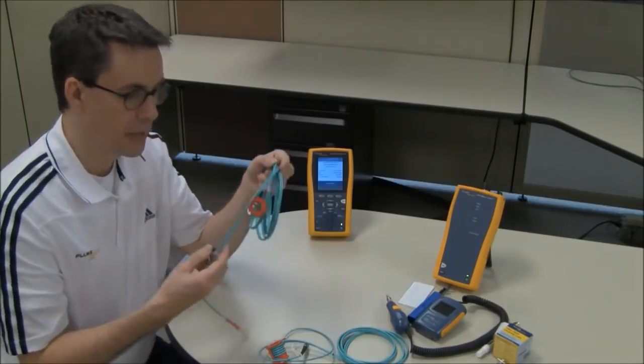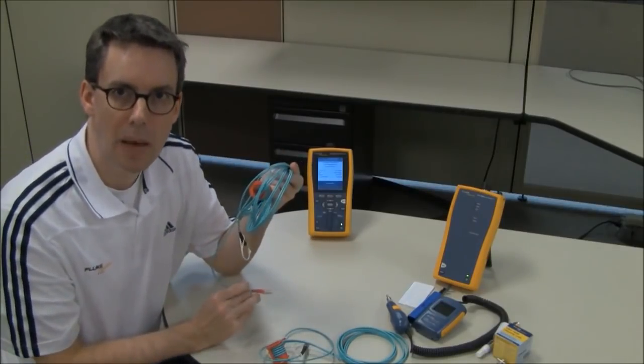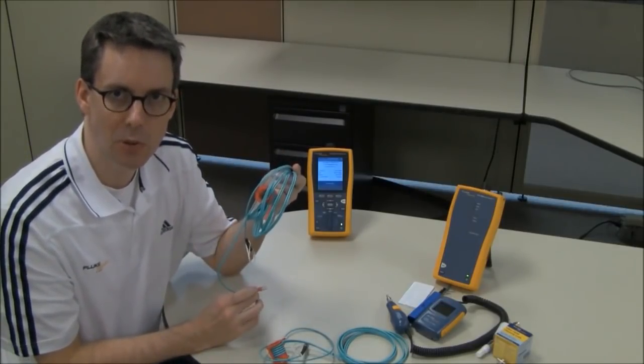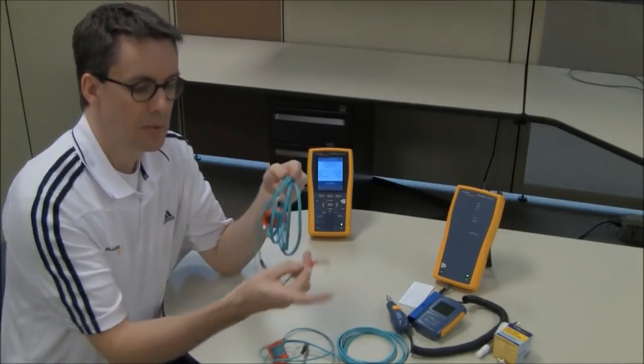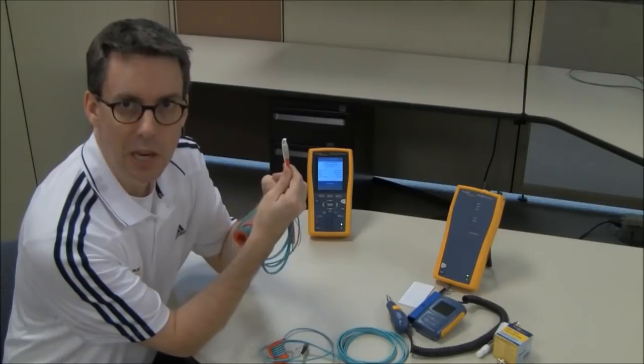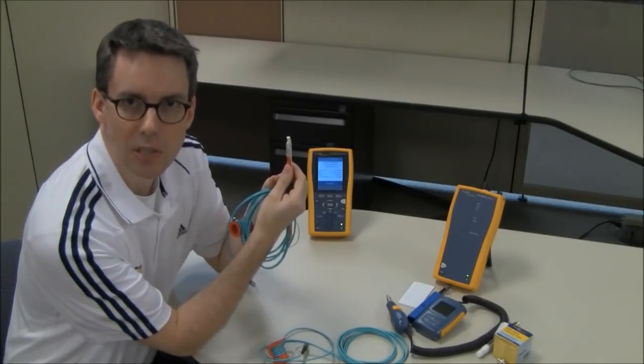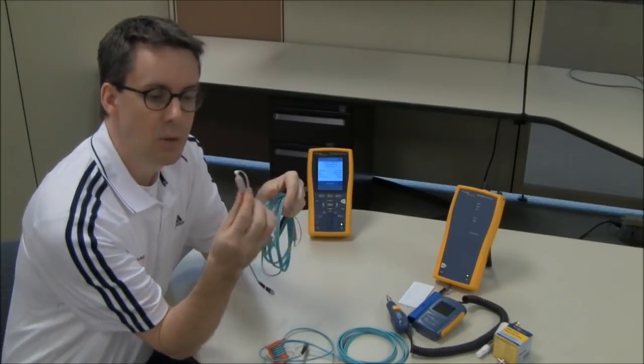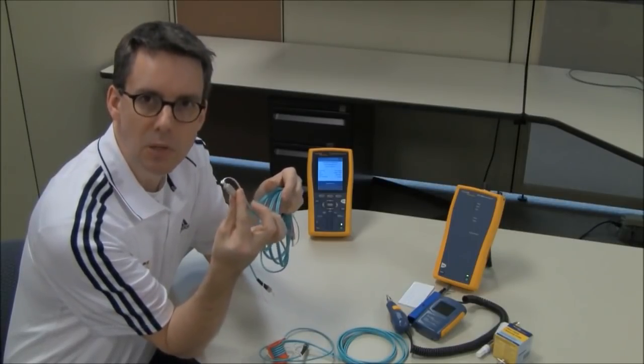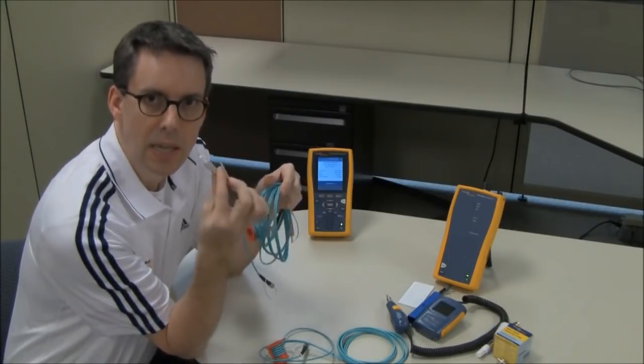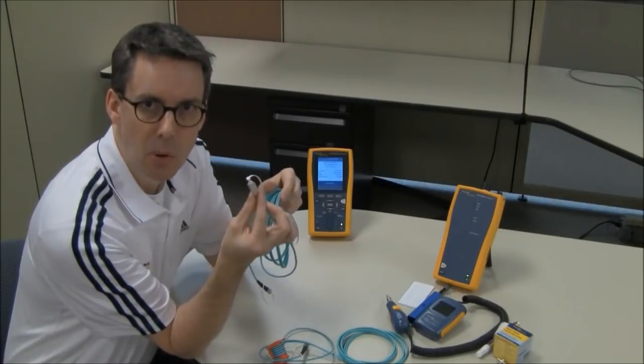Also on the table here, I have my test reference cords, not patch cords, but test reference cords, or TRCs. When you're doing a measurement, specifically if you're doing it to the ISO IEC 14763-3 standard, you must use reference-grade connectors on the end. That means for multi-mode, better than 0.1 dB, and for single-mode, better than 0.2 dB.